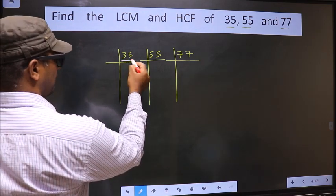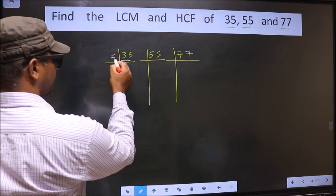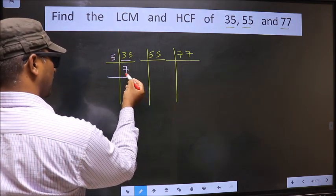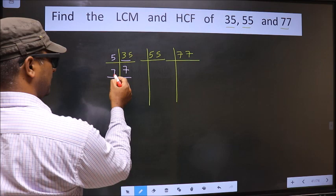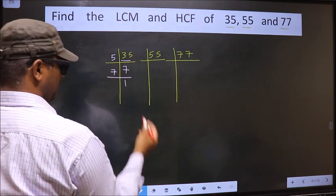Here we have 35. 35 is 5 times 7. Now we have 7, which is a prime number, so 7 times 1 equals 7.